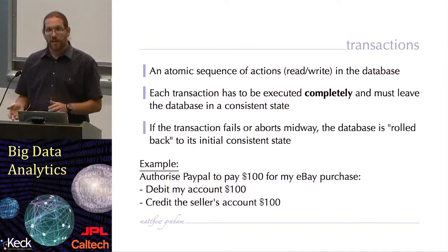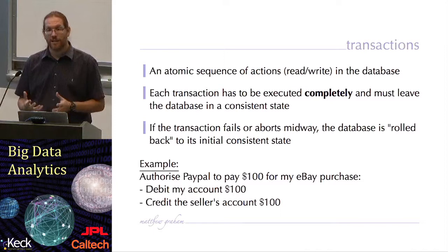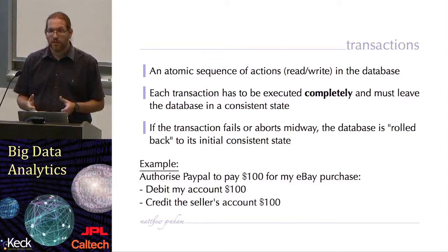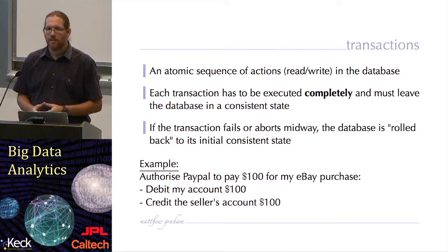If a transaction should fail or abort midway, the database rolls back to an initial consistent state. You don't need to worry about this yourself because the database management system in the relational database takes care of this for you. But it's nice to know that should a particular transaction fail or crash, when you're using a relational database, the data is not going to be compromised in any way because the DBMS is going to go back to a safe position. This is one of the advantages of using a DBMS as opposed to just working programmatically with your data. If you're doing a calculation on your data and you suddenly crashed, you may find that your data is corrupted.